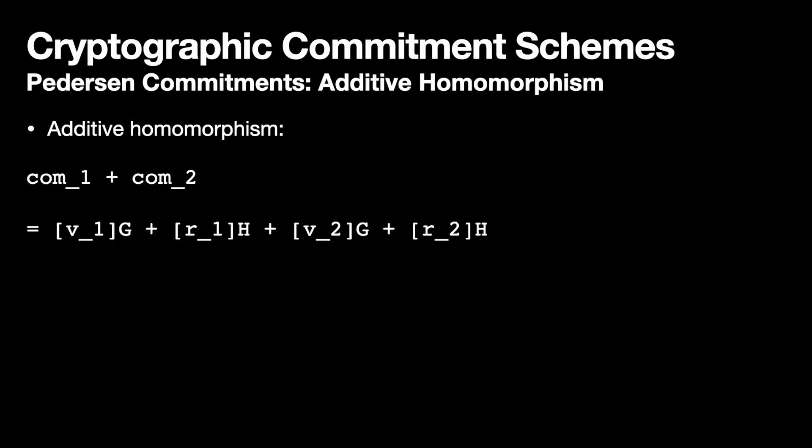Let's show why that is the case. We're going to add two commitments together: commitment one plus commitment two. Unpacking commitment one, that's going to be v1, the first value times the generator g, plus r1, which is our first randomness scalar times the generator h. Plus commitment two: v2, the scalar which is our value from the second commitment times the generator g, plus the randomness from the second commitment times the generator h.